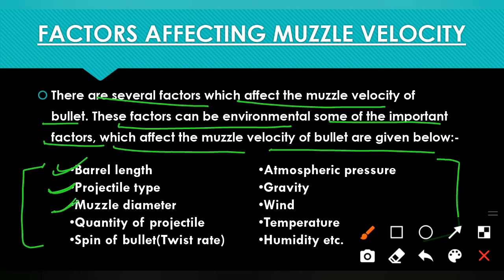Next is muzzle diameter. In shotgun firearms where rifling is not present, choking is generally present. Sometimes reverse choking is used. Different types of choking result in different muzzle diameters — comparatively larger or smaller than the chamber size. This variation in muzzle size causes an important effect on muzzle velocity, determining whether it increases or decreases. If you are unfamiliar with choking, a video on it has already been uploaded in the forensic ballistics complete playlist — be sure to watch it.